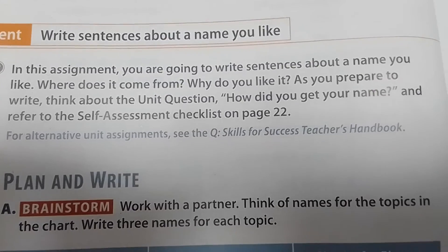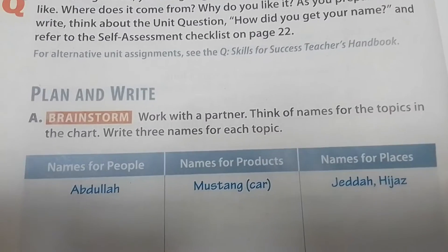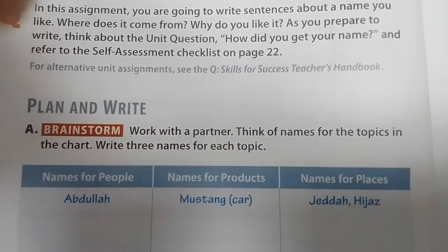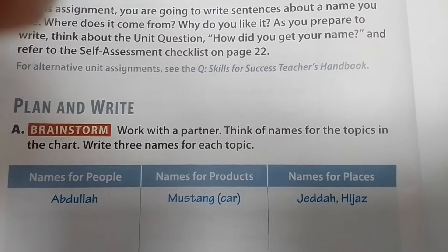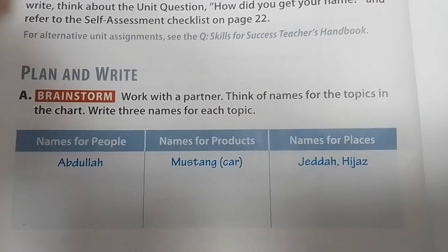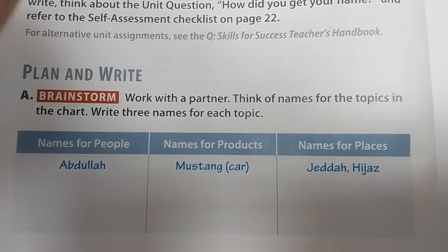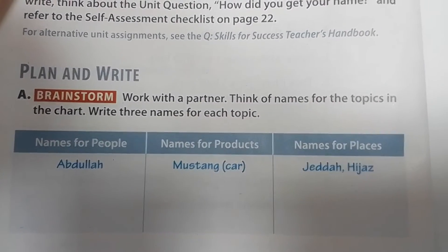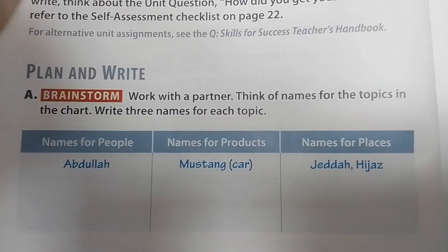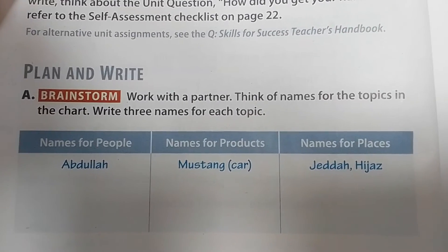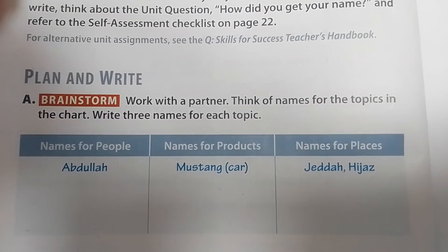Step 4: Refer to the self-assessment checklist on page 22. Step 5: Plan and write. First, you have to brainstorm, meaning work with a partner. Think of names for the topics in the chart and write three names for each topic. The topics are: names for people, names for products, and names for places. You can see there's Abdullah, Mustang as a car, and Jeddah or Hijaz. You must write three names for each topic — we've already got one each, so two more for each topic.